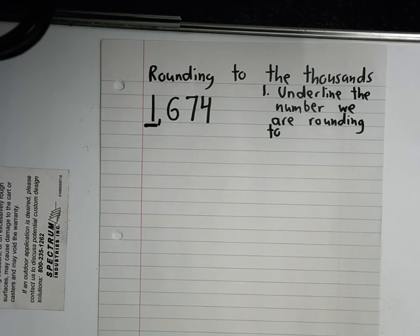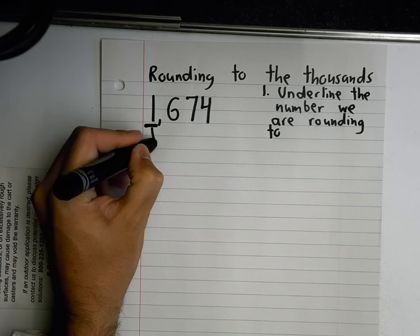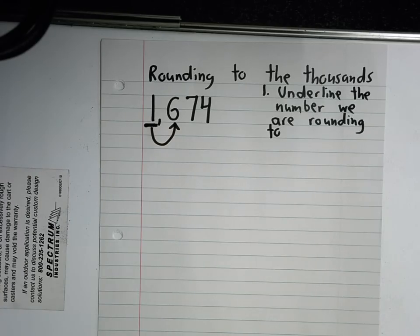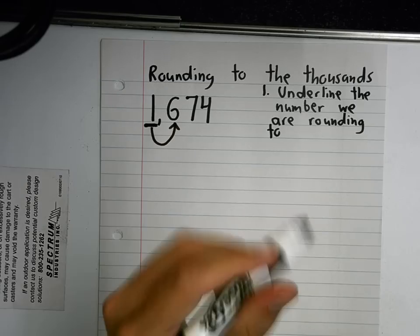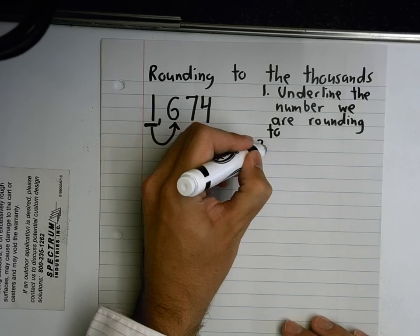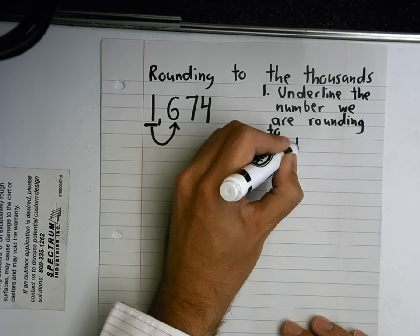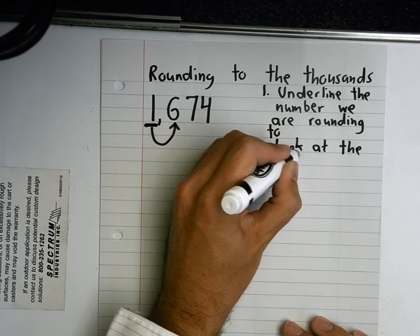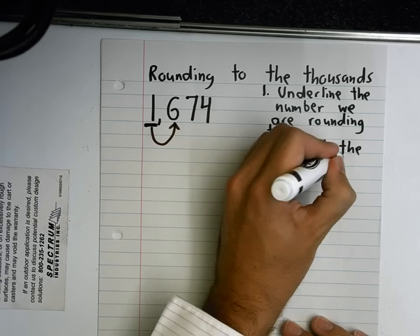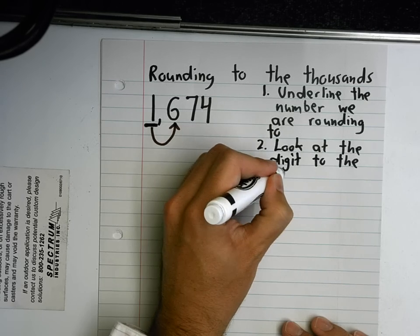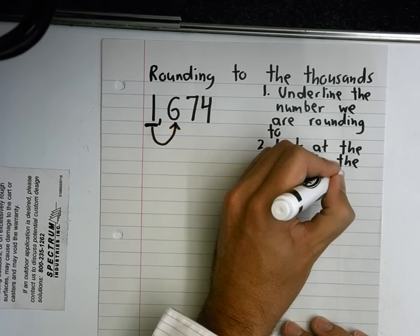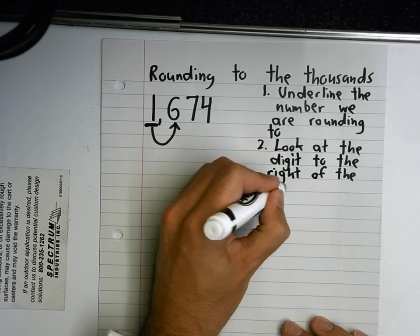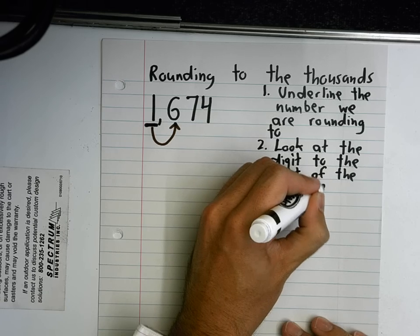Because we're rounding to the thousands place, what I need to do is — step two — look at the digit directly to the right of the underlined number. Look at the digit to the right of the underlined digit.